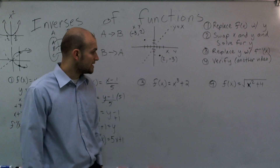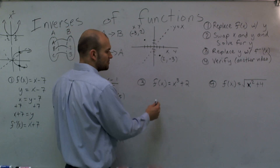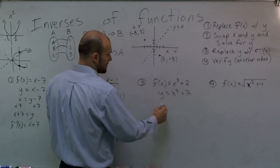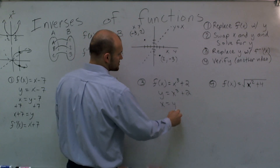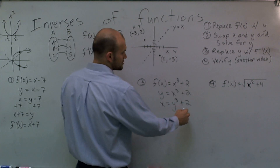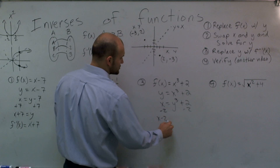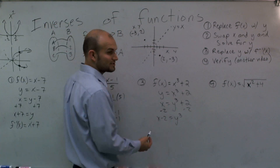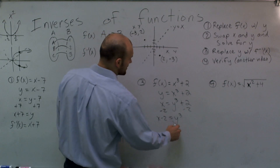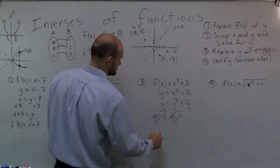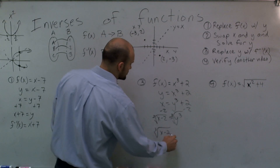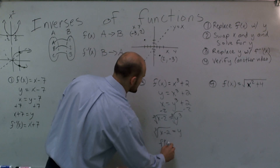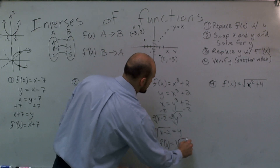For number 3, we have a cube function: y = x³ + 2. Swap x and y: x = y³ + 2. Subtract 2: x - 2 = y³. Then to get rid of the cube power, take the cube root of both sides: cube root of (x - 2) equals y. In correct notation: f inverse of x equals the cube root of (x - 2).